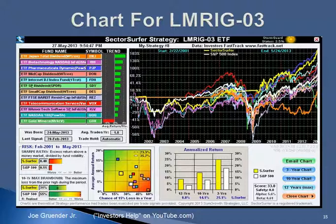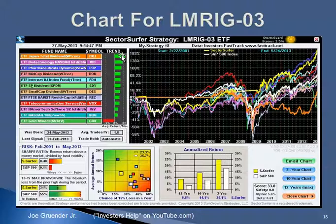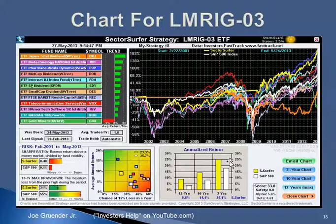Let's take a look at strategy number three — Bill's strategy. His symbols are shown here, and the strongest trend right now is the Japan Total Dividend ETF. Various funds are displayed, and the strategy shows increasing annualized returns over the last 12-plus years. We'll take a deeper look at this in video number two.